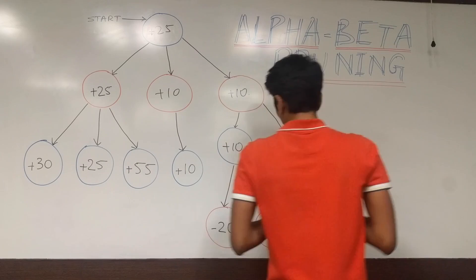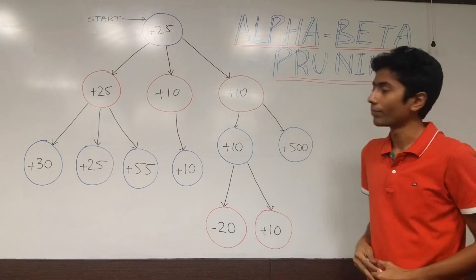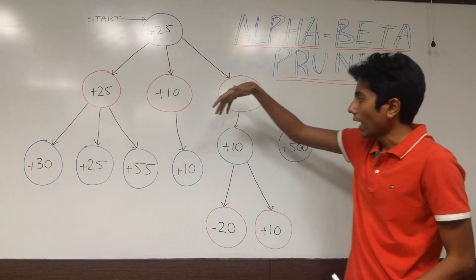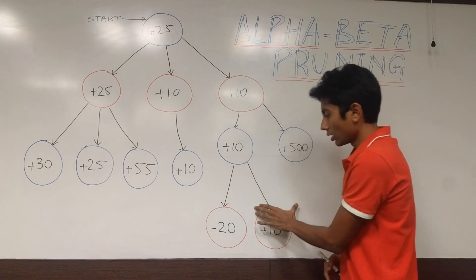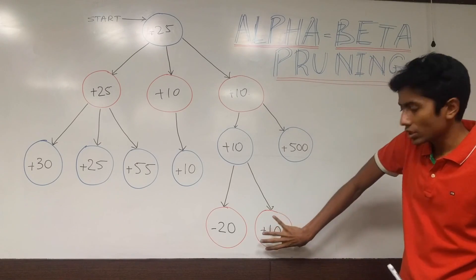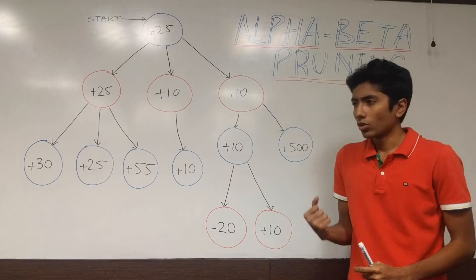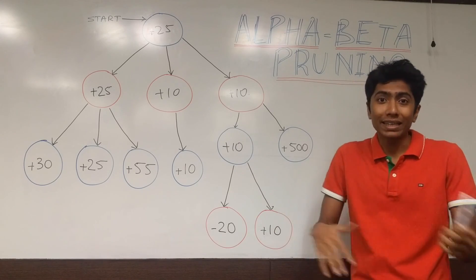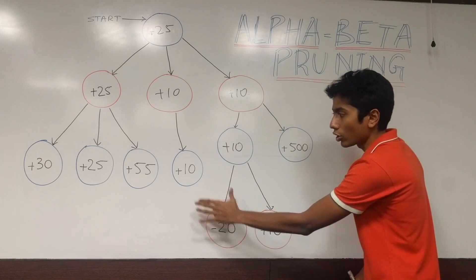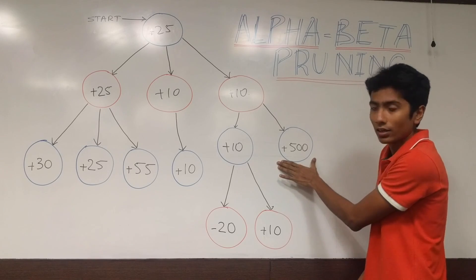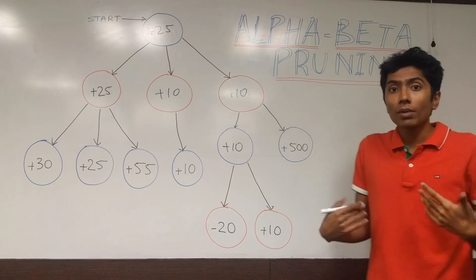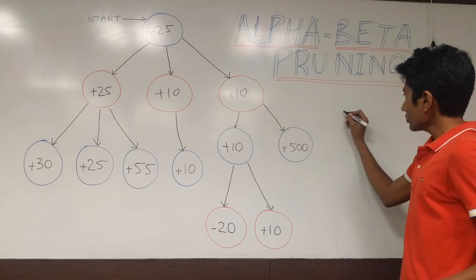We went through each and every node and expanded them, probably running heuristics on these nodes. When you're playing a game like chess, evaluating these terminal nodes is actually very expensive — you check for checkmates, whether your king is in check, etc. So what you want to do is save on evaluating the cost of these nodes. You want to reduce the number of evaluations and also reduce the branching factor.